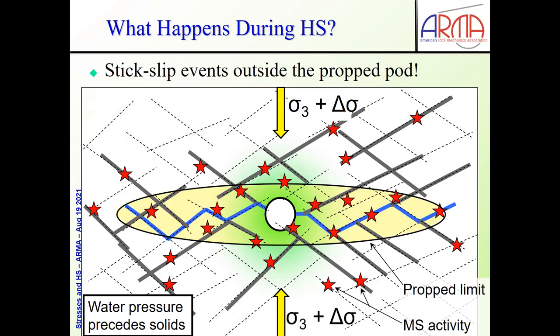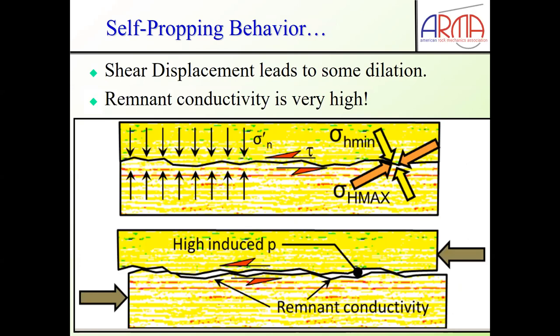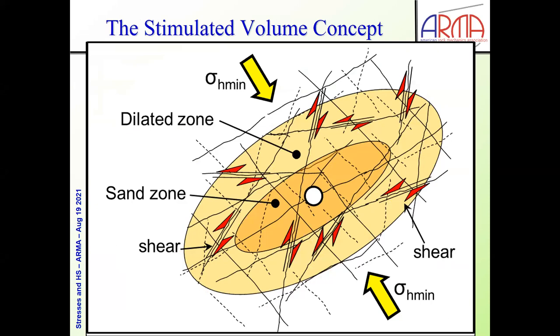We do stress analysis now very sophisticated in fractured rock masses to try to understand the development of a stimulated zone. We know that the stimulated zone will grow outwards, roughly normal to sigma-3. Those little red stars indicate that we're going to have micro-seismic events around the propped zone. These micro-seismic events in the ambient stress field lead to dilation of these surfaces. There's remnant conductivity within these stimulated fractures. We're not creating new fractures — we're stimulating old ones. And that's a pathway for gas and oil to come out of the very low permeability rock.